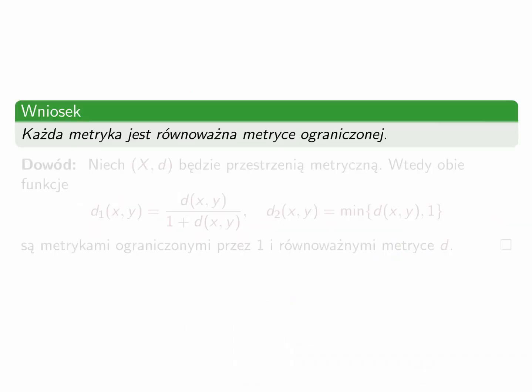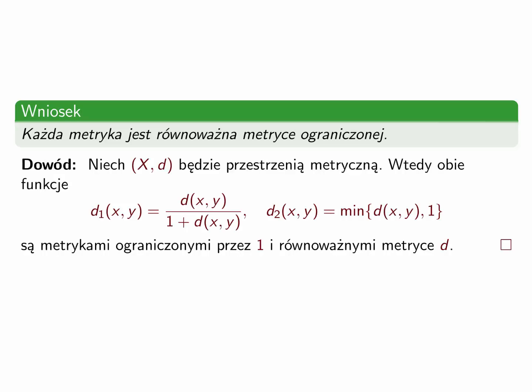Prostym, lecz istotnym wnioskiem jest następujący fakt: każda metryka jest równoważna metryce ograniczonej. Dowód: niech (x, d) będzie przestrzenią metryczną. Wtedy obie funkcje d1 i d2, zdefiniowane odpowiednimi wzorami, są metrykami ograniczonymi przez 1 i równoważnymi metryce d. To, że są równoważne metryce d, wynika z poprzedniego faktu. Fakt ten można było dowieźć bezpośrednio, jednak poprzednie twierdzenia dały nieco szersze spojrzenie na zagadnienie.